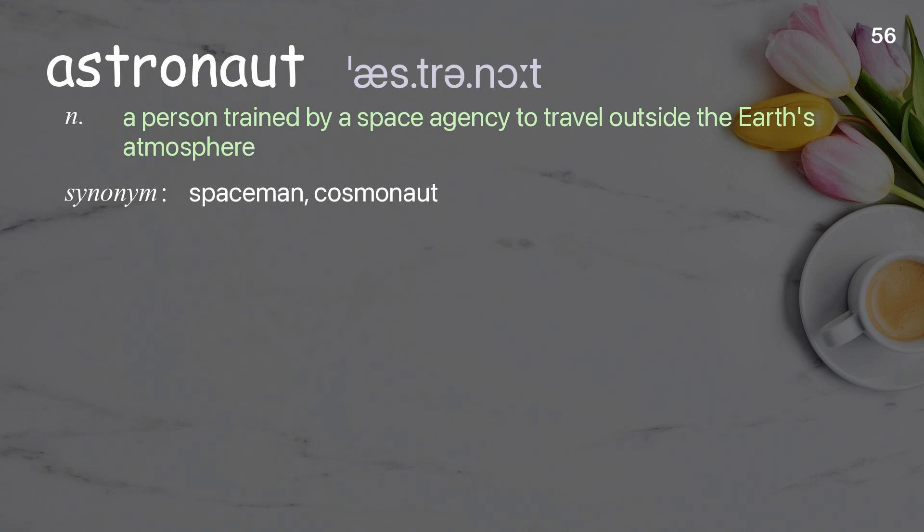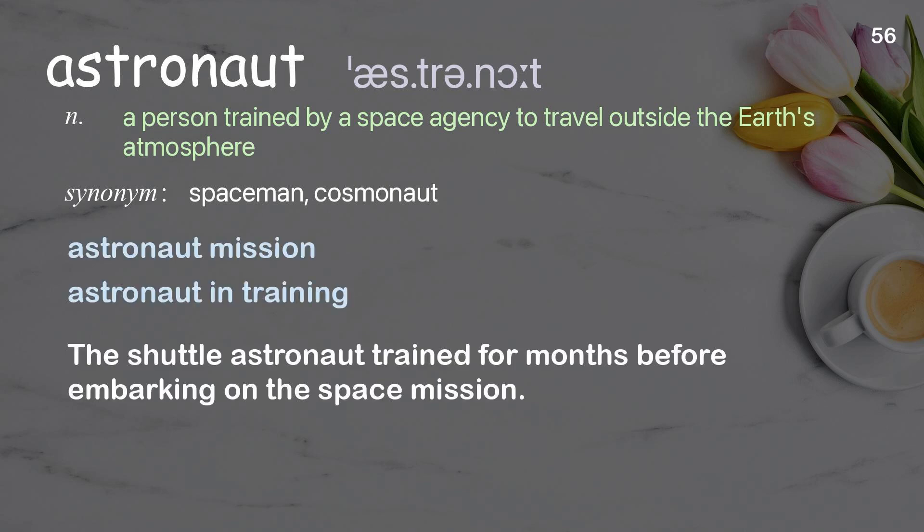Astronaut: a person trained by a space agency to travel outside the earth's atmosphere. Examples: astronaut mission; astronaut in training. The shuttle astronaut trained for months before embarking on the space mission.